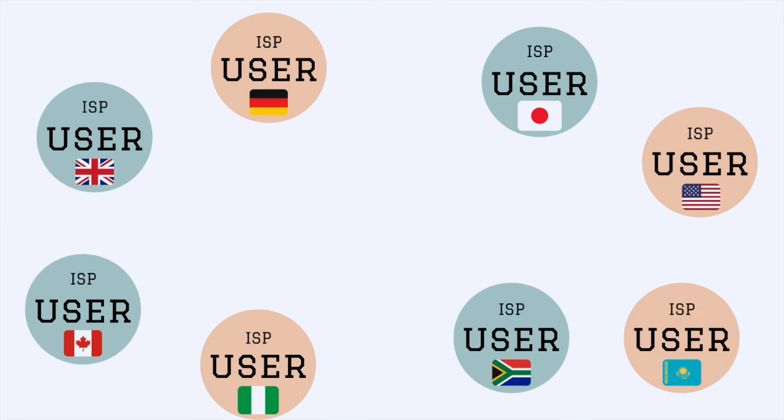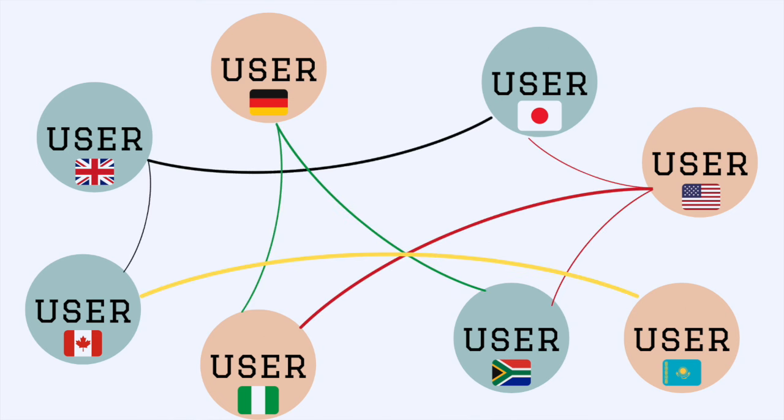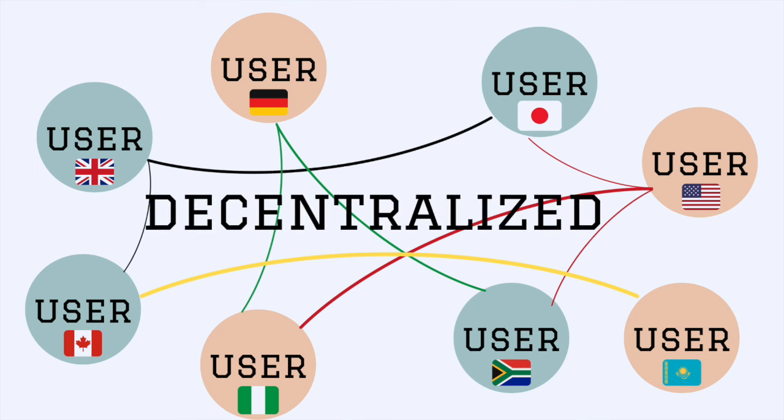Web 3.0 is based on sharing. Every user in every country can share their information with another user connected to the same network. This is known as a decentralized network.